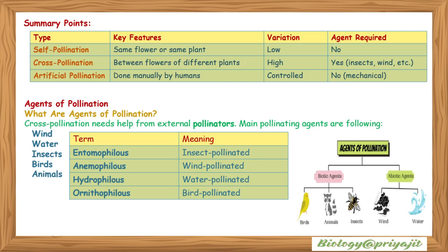Agents of pollination: cross-pollination needs help from external pollinators. Main pollinating agents include wind, water, insects, birds, and animals. Entomophilous means insect-pollinated; anemophilous means wind-pollinated; hydrophilous means water-pollinated; ornithophilous means bird-pollinated. Biotic agents include birds, animals, and insects; abiotic agents include wind and water.